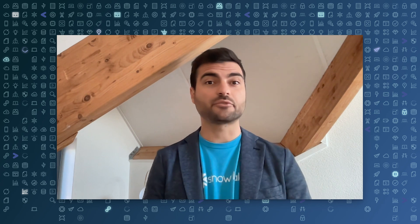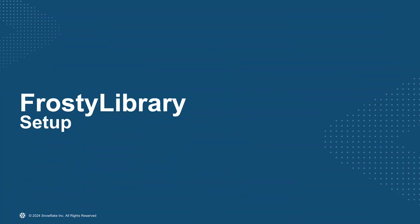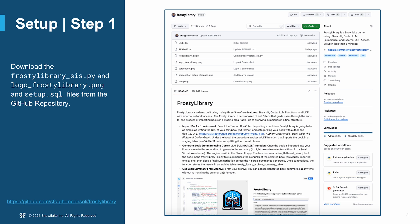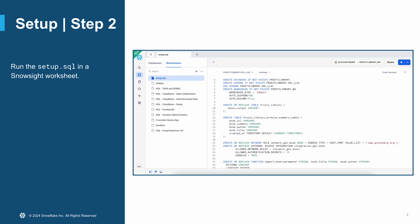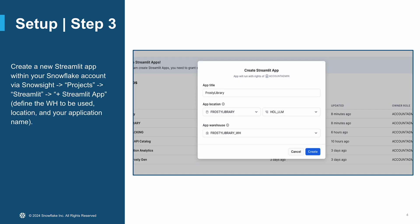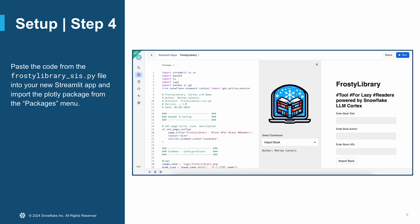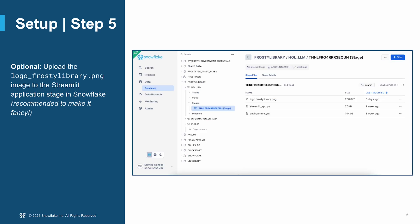So let's get started with setting up Frosty Library. These are the five simple steps you need to follow. Step one: start downloading all the necessary files from the GitHub repository. Step two: copy-paste into a Snowflake worksheet the setup script that you just downloaded and execute it. Step three is all about creating a new Streamlit app in your Snowflake account, defining the app title, application location, and the virtual warehouse to execute it on. Step four is all about passing the code from the GitHub file into your new app. And finally, with step five, don't forget to upload the Frosty Library logo for that extra touch in the application.